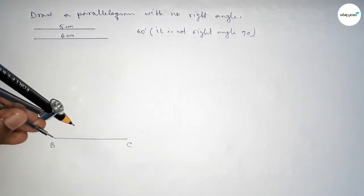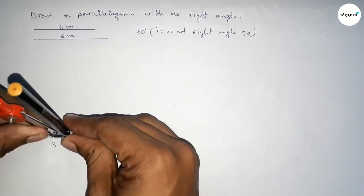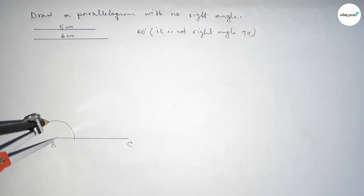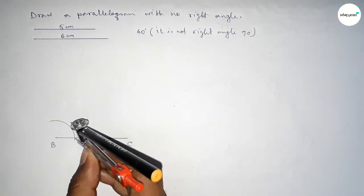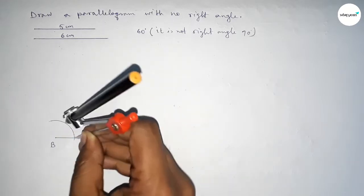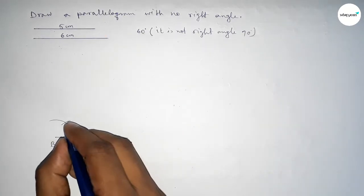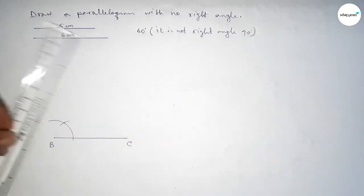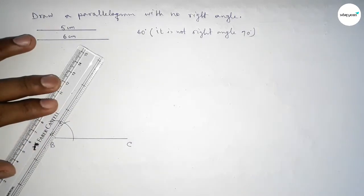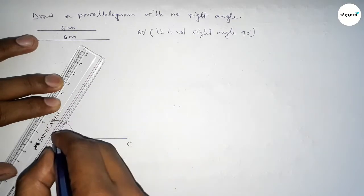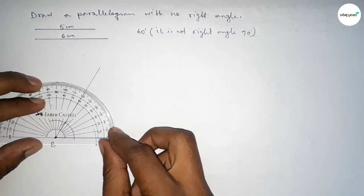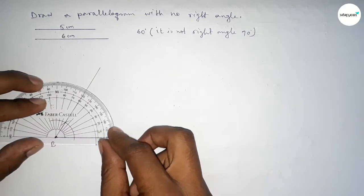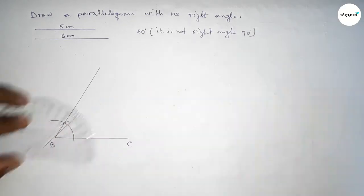Now we have to draw a 60 degree angle at point B. Putting the compass on point B and taking any length, drawing an arc. With the same length, putting the compass on the arc and cutting here so both curves intersect at a point. Joining this line to get a 60 degree angle — checking this angle, it is perfectly 60 degrees.